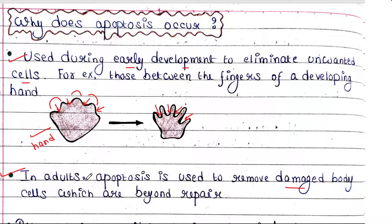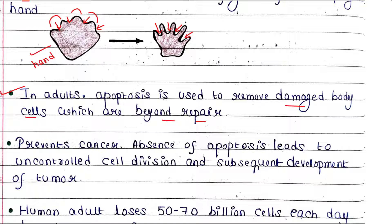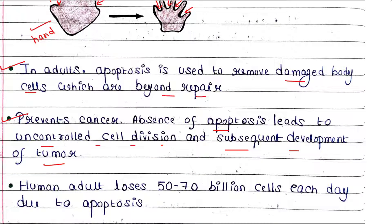In adults, apoptosis is also used to remove damaged body cells that cannot be repaired. We don't want damaged cells to stay inside the body, so those cells which could not be repaired undergo apoptosis. Apoptosis also prevents cancer, because the absence of apoptosis leads to uncontrolled cell division and subsequent development of tumors. A human adult loses 50 to 70 billion cells each day due to apoptosis.